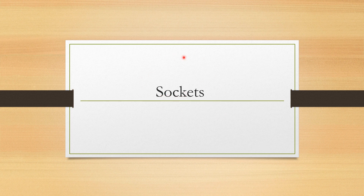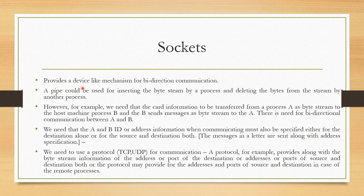We will come to the next type of IPC function, that is the inter-process communication function, which is the socket. Sockets are similar to that of pipe except the fact that it allows full duplex communication, that is fully bidirectional communication. It is a device which provides a mechanism for bidirectional communication. A pipe could be used for inserting the byte stream by a process and deleting the byte from the stream by another process — one end is the write end, another end is the read end. Pipes are used only for unidirectional communication, but in the case of sockets, bidirectional communication is allowed.